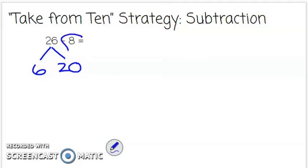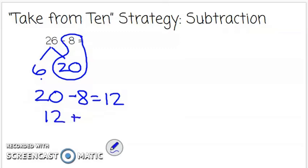So now I can easily see right there that 20 minus 8 equals 12. But I still have that 6 right there that I didn't use so 12 plus 6 is 18. Therefore 26 minus 8 equals 18.